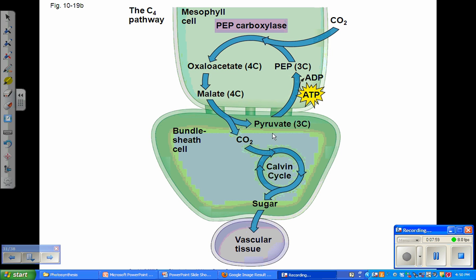The bundle sheath cells express photosystem one, and that's the only photosystem they have, and they use cyclic electron flow, which generates ATP. If you remember that from our previous discussions, that cyclic electron flow produces the ATP that with the pyruvate travels back to the mesophyll cells to regenerate our phosphoenolpyruvate.